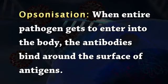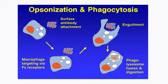Opsonization: when an entire pathogen enters into the body, the antibodies bind around the surface of the antigen. Normally these pathogens can be recognized by phagocytic cells, but when they are coated with antibodies, they suddenly become a target for phagocytic cells. Phagocytic cells can engulf and kill them. This process is known as opsonization.